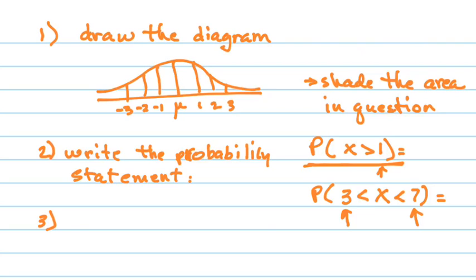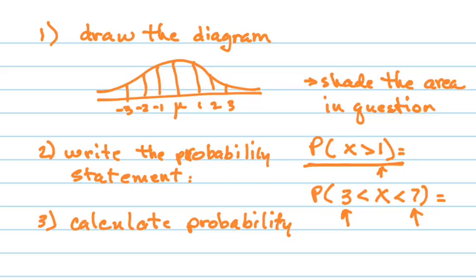The third step is to simply calculate the probability. That is where we've been working so far — by putting the right numbers in the right order in the calculator and then finding out what our probability is. Remember, we've been doing that to 4 decimal places. But be careful: some questions are asking you to do it as a percent. To find a percent, you just multiply the decimal times 100 and put on the percent symbol. So be careful about the way they ask you to answer the question.